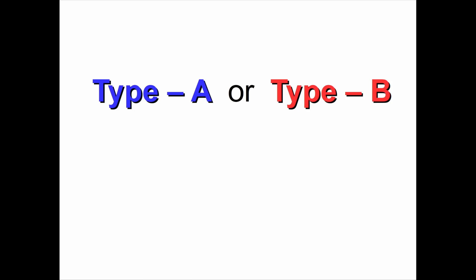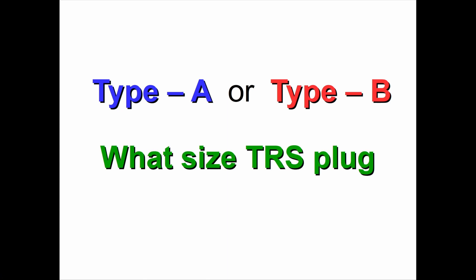When you go out to buy a MIDI TRS adapter, you need to know: is it a type A or type B? Because they are not compatible. You'll need to know which type is required for your piece of equipment — look that up in your manufacturer's literature. Next, you need to know what size the tip ring sleeve plug is. Most commonly it'll be a 3.5 millimeter if you're buying an aftermarket one, but you need to check because it might be a 2.5, and I've even seen some that are quarter-inch jacks. With that information, you should be able to go out and buy yourself the proper adapter.